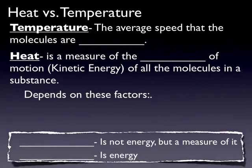There is a difference between heat and temperature. Temperature is the average speed of the molecules in a substance — the average speed that molecules are vibrating is the temperature. When you measure temperature, you're measuring the average speed of the molecules.